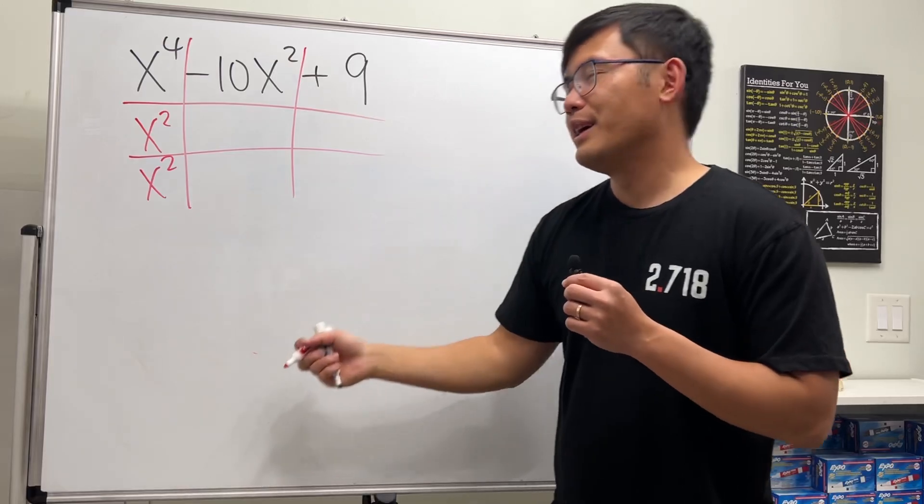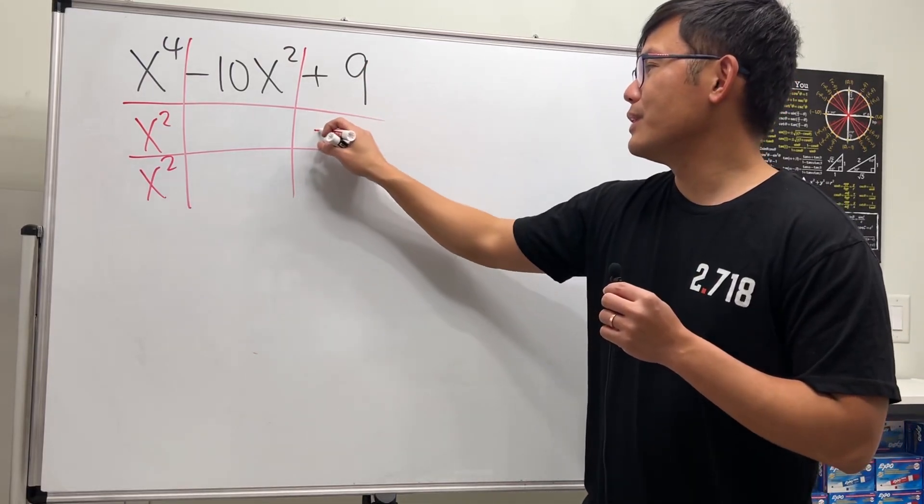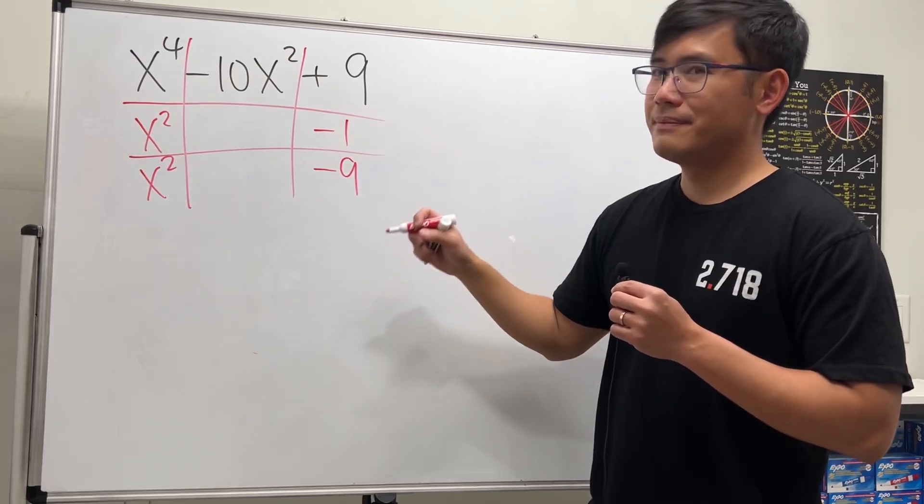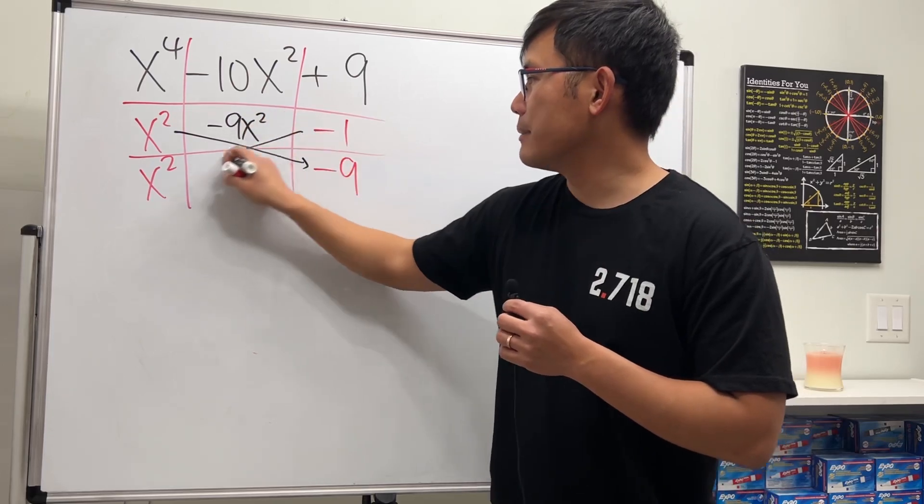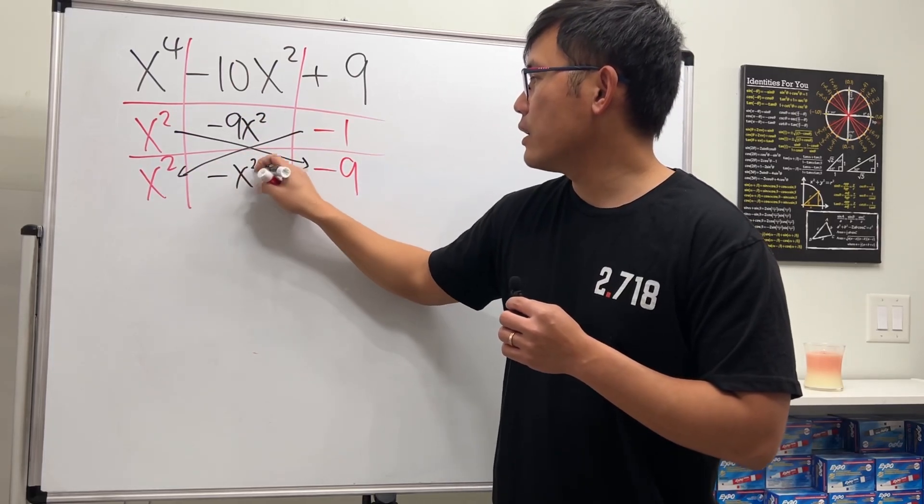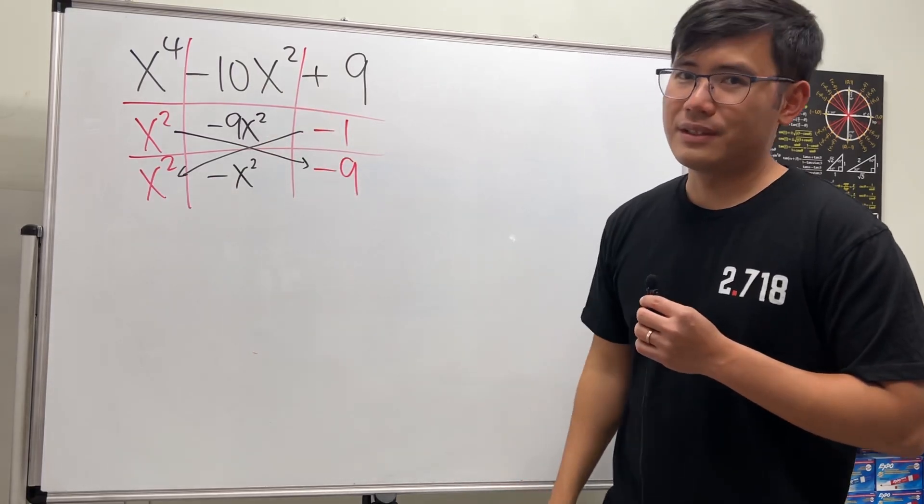And then for the positive 9, what times what will give us positive 9? I'll tell you: minus 1 and minus 9. Why does this work? Because this times this is negative 9x squared, and this times that is negative x squared. Together we do end up with negative 10x squared, so we have found the correct combination.